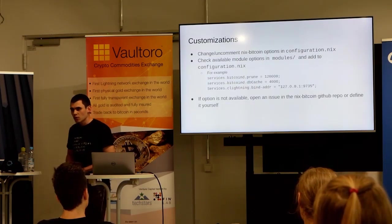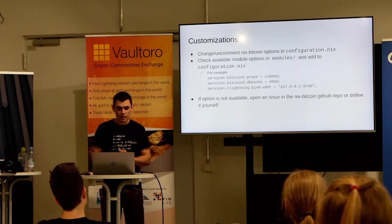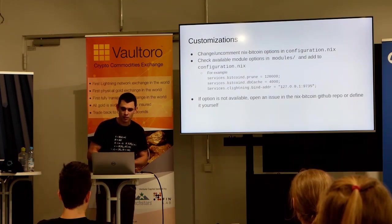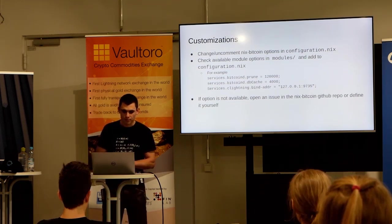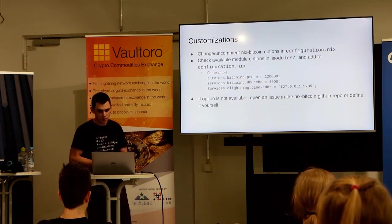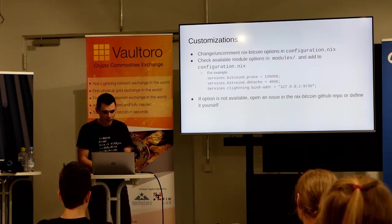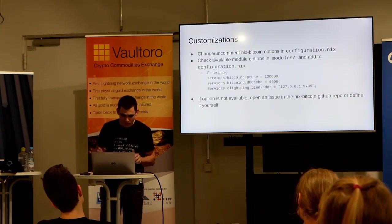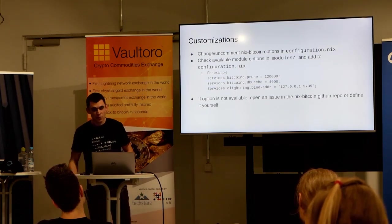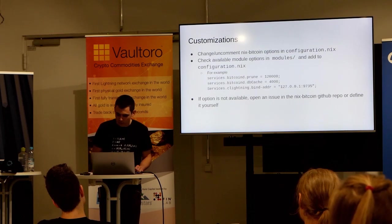To customize NixBitcoin, the easiest thing is to go through the configuration.nix — there are a lot of configuration options there, they are all documented, and mostly you just need to uncomment them. There are more options in the modules directory. For example, you can set pruning if you want to and know what you're doing, even if you also enable CLightning. You can set a different DB cache, a different address where CLightning is listening, and so on. If an option you need is not available, feel free to open an issue in the NixBitcoin GitHub repo — we might do that for you, or you can define it yourself.